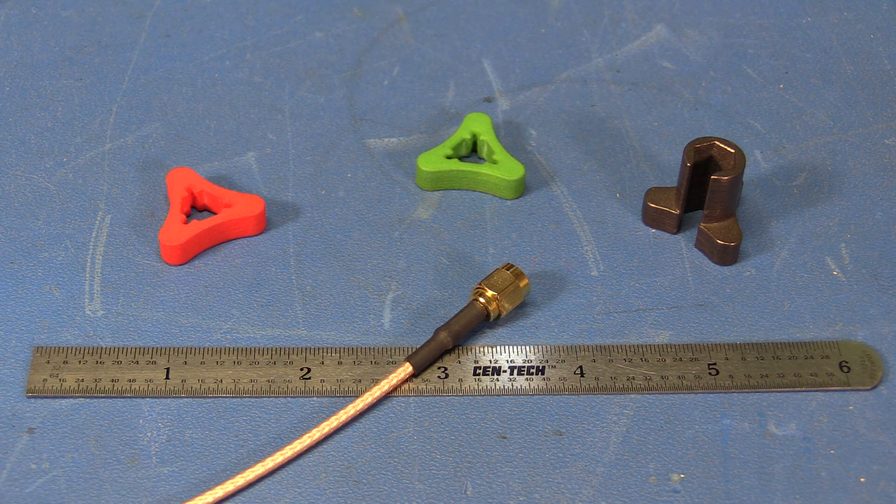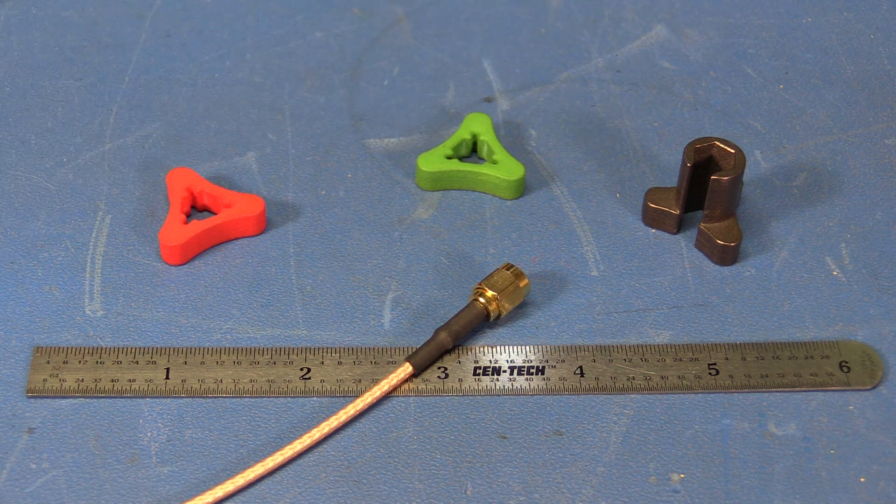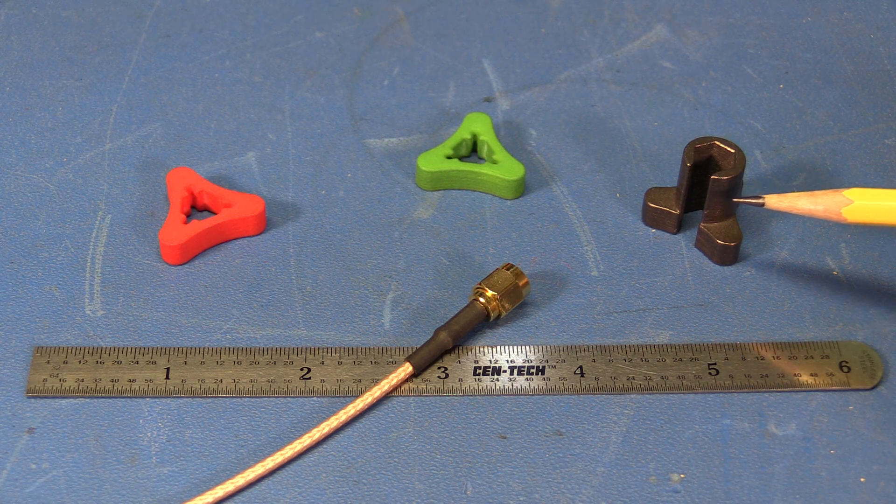The first is a plastic device called SMA knob. Here's an example in red, an example in green. And the second is a metal tool called SMA barrel wrench.